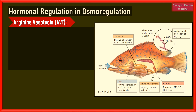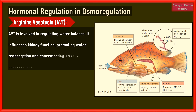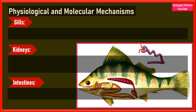Number three: arginine vasotocin. This hormone is involved in regulating water balance — it influences kidney function by promoting water reabsorption and concentrating urine to conserve water, particularly in marine fishes. These three main organs in fishes are most directly concerned with osmoregulation: gills, kidneys, and intestines.